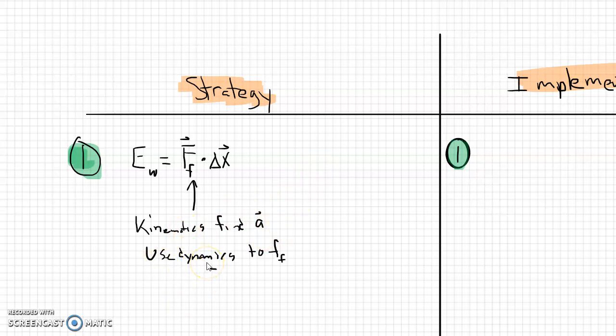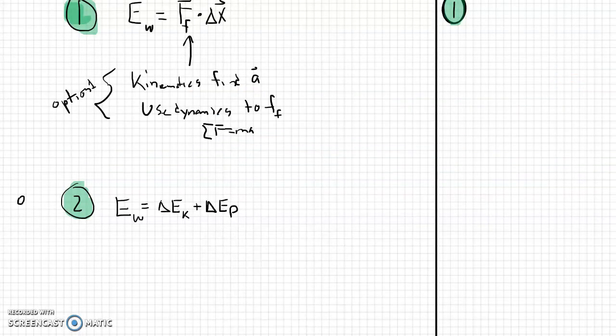Dynamics, of course, is F equals MA. So the sum of forces equals mass times acceleration. And this is a very valid approach to it. However, let's call this option one. I'm going to propose that there's a different way to do this. And this different way can actually use work and energy and their relationship. So I'm going to call this option two.